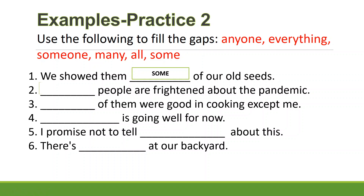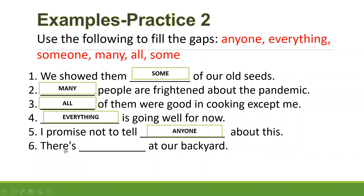Number three: '_____ of them were good in cooking except me' — answer is 'all.' Number four: '_____ is going well for now' — answer is 'everything.' Number five: 'I promise not to tell _____ about this' — answer is 'anyone.' Finally: 'There's _____ at our backyard' — answer is 'someone.' Those are examples of sentences using indefinite pronouns.